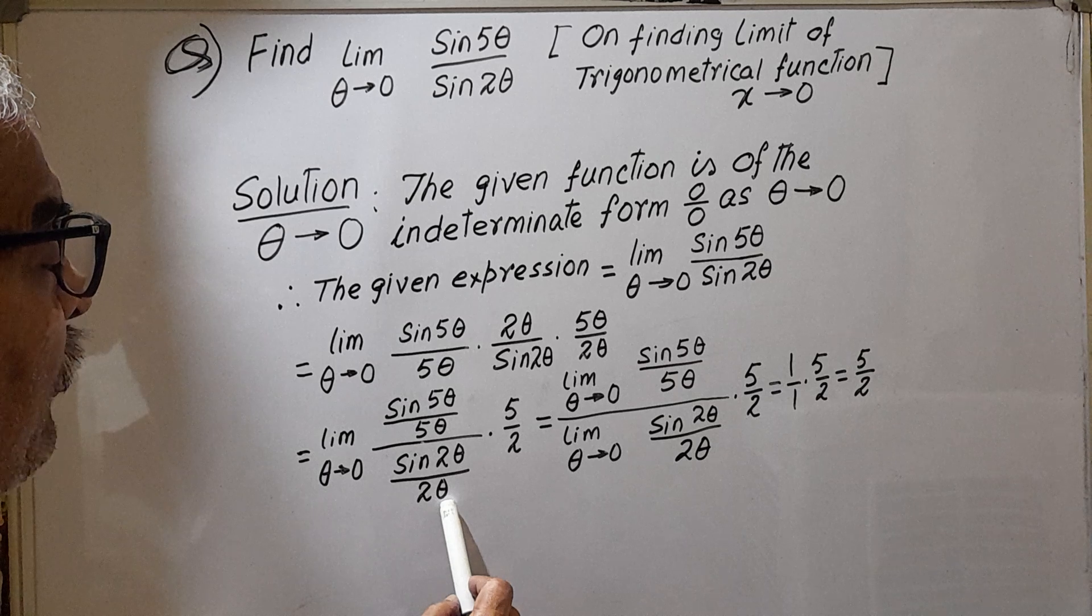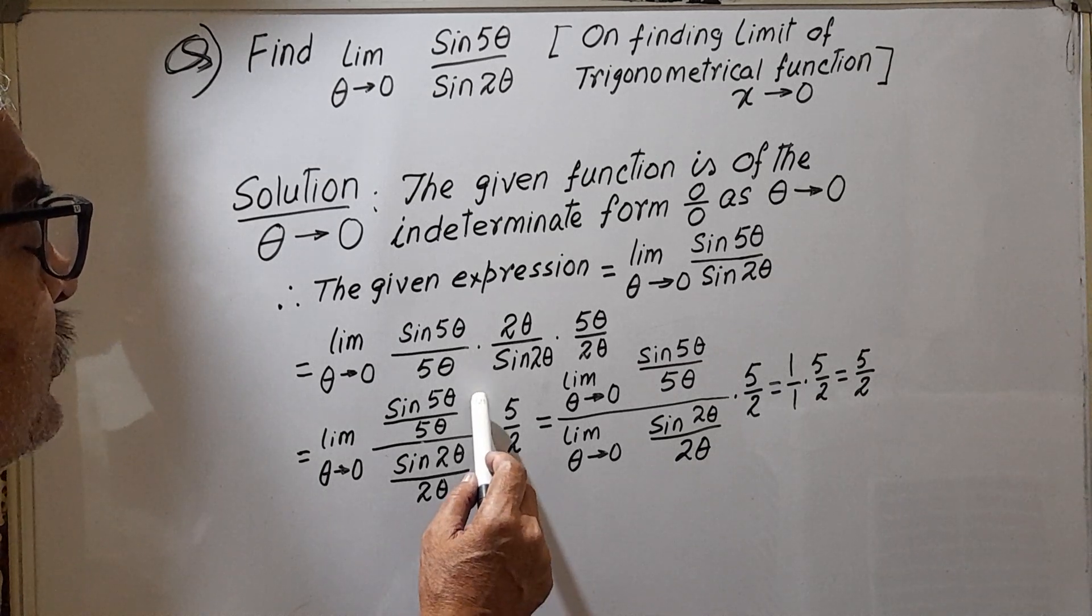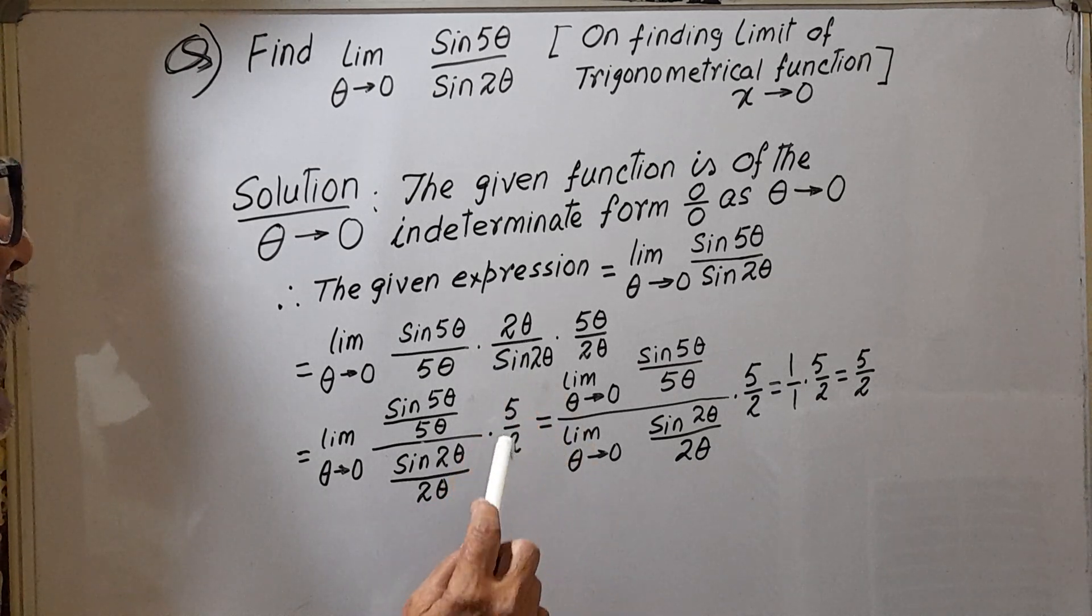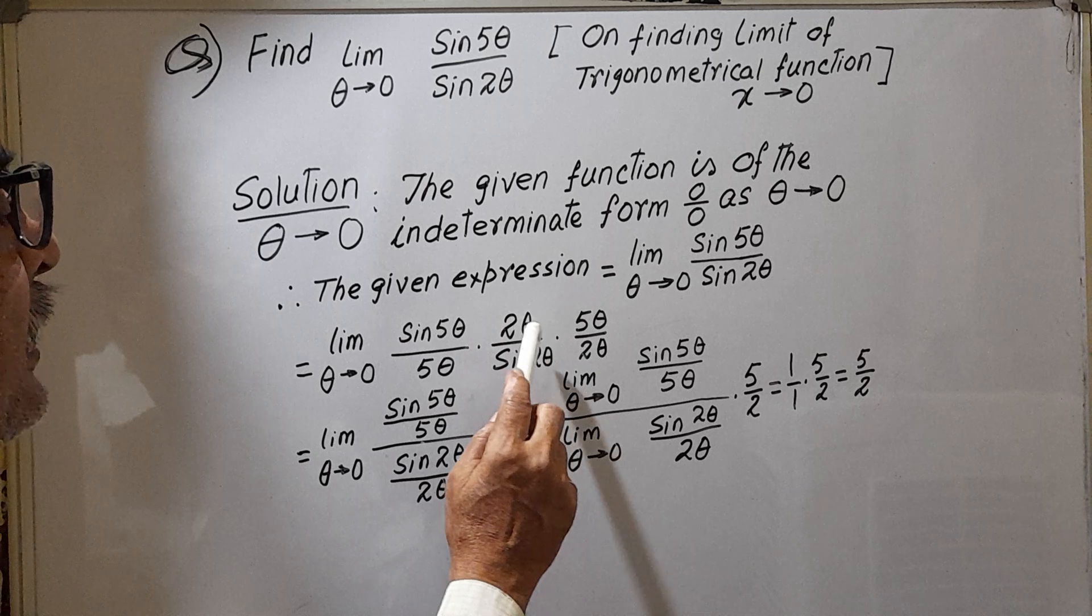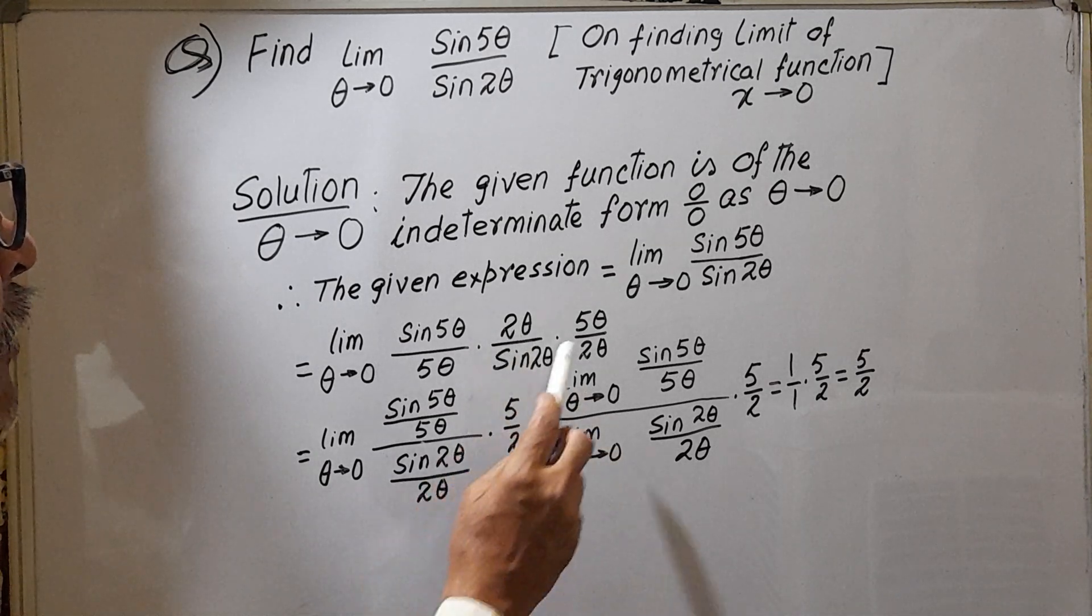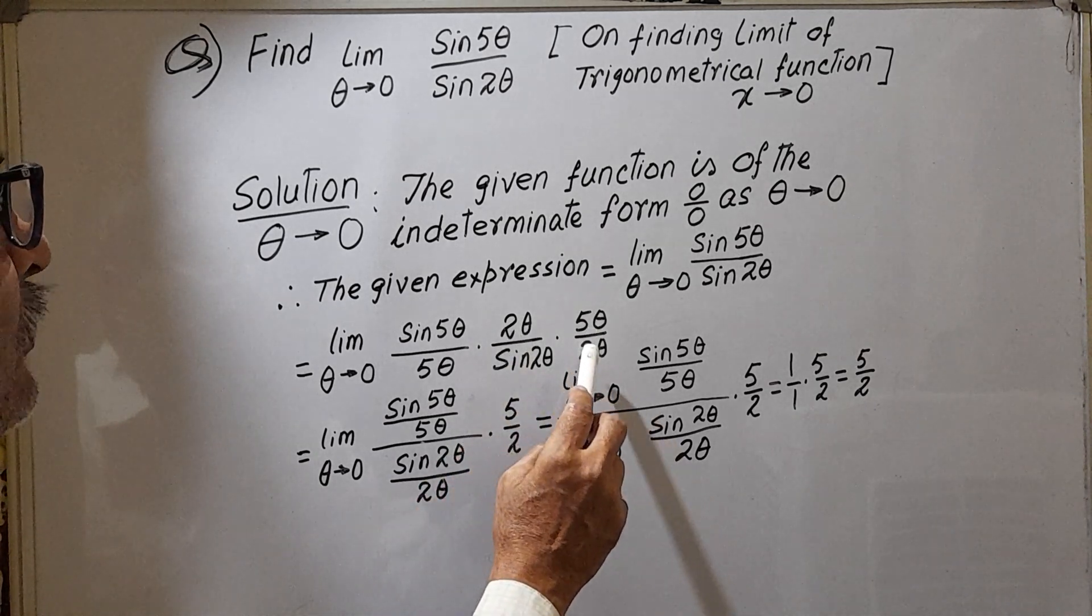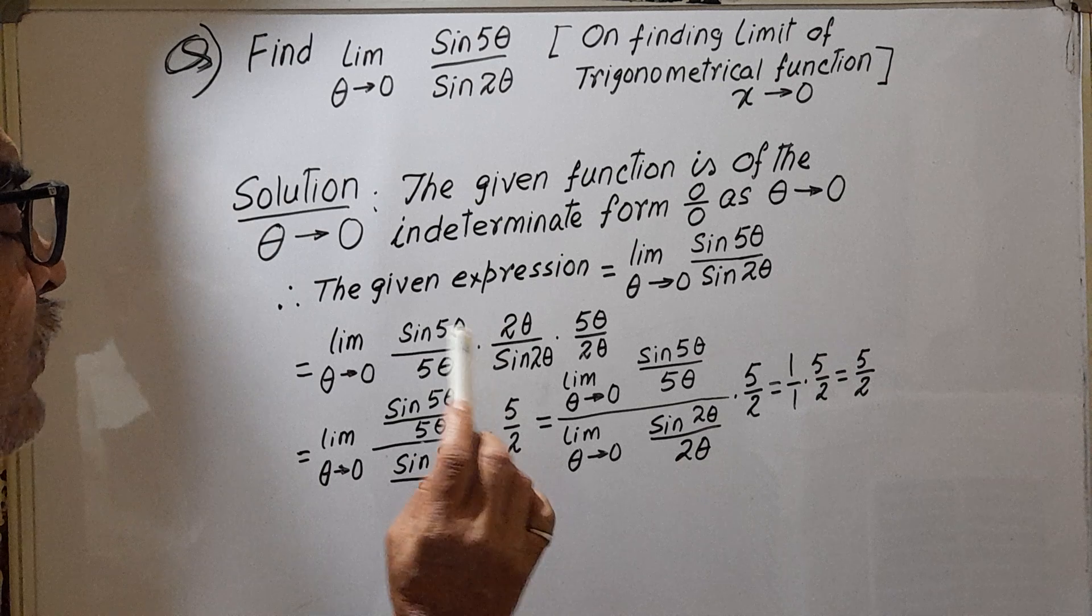Now it is here in the denominator, it will go up. That means denominator like this, into 5 by 2. I am writing in this way, and 5 theta by 2 theta we made 5 by 2.